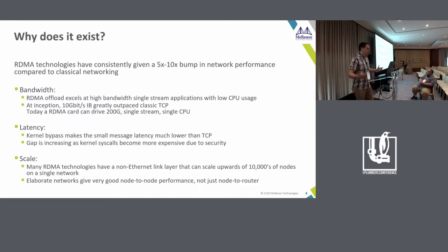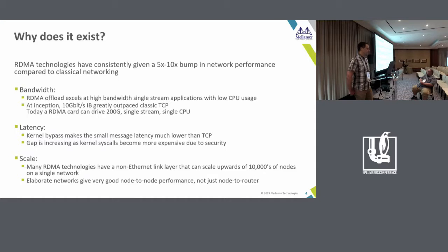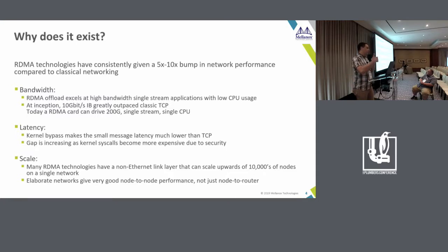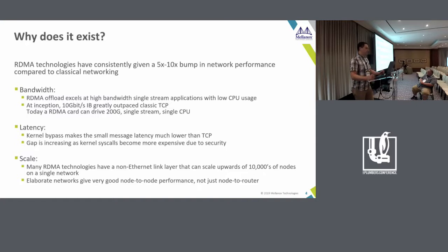Generally speaking, if you're interested in zero-copy data transfer, high network bandwidth, or low latency, this is the technology you'll be interested in. The general industry purpose is the bandwidth and latency you get by bypassing the kernel for high-performance networking. Since the early 2000s, it's been somewhere between 5x and 10x bandwidth win over single-stream TCP on the same system — closer to 5x today. Bypassing the kernel eliminates all syscall overhead and things get multiples faster.